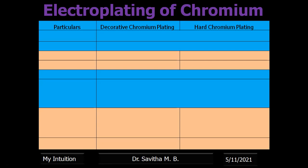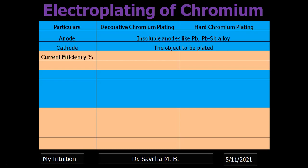What are the bath composition and parameters you need to maintain for coating chromium over an article? Instead of using chromium as the anode, we use insoluble anodes like lead or lead-antimony alloy. The cathode is always the object to be plated in both decorative and hard coating. Current efficiency is 10 to 15% for decorative and a little higher for hard coating.